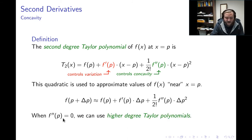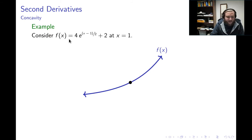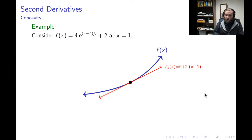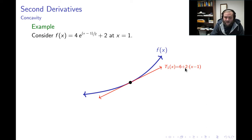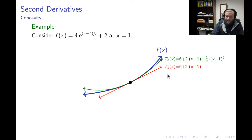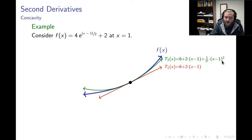If the second derivative equals zero, one could move on to higher-degree Taylor polynomials, but we won't discuss that. For an example, consider f(x) = 4e^((x−1)/2) + 2 at x = 1. One thing I could do is construct the local linearization at x = 1 — the tangent line, t₁(x) — which ends up being 6 + 2(x − 1). I could also use the quadratic approximation, the second-degree Taylor polynomial plotted in green, whose formula is the linear approximation plus (1/2!)(x − 1)².